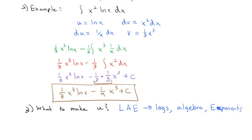Actually, the real acronym technically should be LATE, because it also includes Trig — sine, cosine, tangent — making it LATE. But we never deal with trig in this course, so we shrink it down to LAY. However you remember it: whichever comes first — Logs, Algebra, or Exponents — is what we want to make the u. So in our example, we have x squared, which is Algebra, and a natural log, which is a Log. The Log comes first in LAY, so the log is the u.